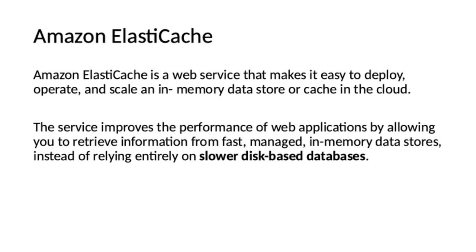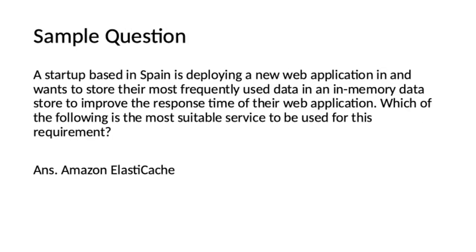Amazon ElastiCache is another topic from where you can expect at least one question. Amazon ElastiCache is a web service that makes it easy to deploy, operate, and scale an in-memory data store or cache in the cloud. The service improves the performance of a web application by allowing you to retrieve information from fast managed in-memory data stores instead of relying entirely on slower disk-based databases. Sample question: A startup wants to store their most frequently used data in an in-memory data store to improve response time. The best option is Amazon ElastiCache — the keyword here is in-memory data store.